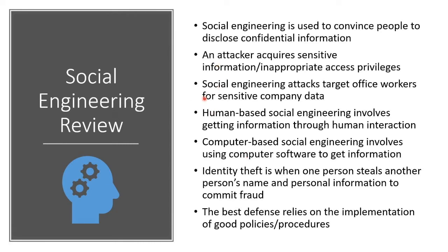So let's review what we know. Social engineering is used to convince people to disclose confidential information. An attacker will acquire sensitive information or inappropriate access privileges using it. We use it to attack office workers for sensitive company data. Human-based social engineering involves getting information through direct human interaction, whether face-to-face or on the phone. Computer-based social engineering involves using a computer to get that information, like phishing or smishing. Identity theft is when one person steals another person's name and personal information to commit fraud, and the best defense relies on the implementation of good policies, procedures, and training.